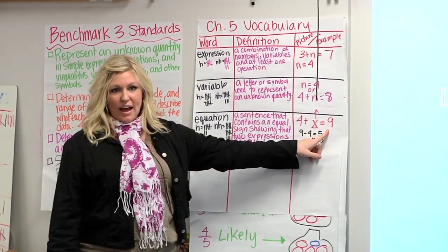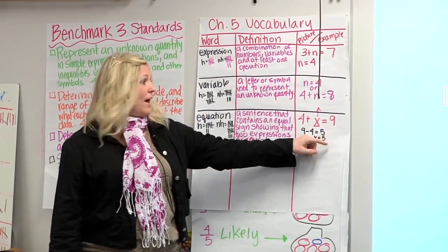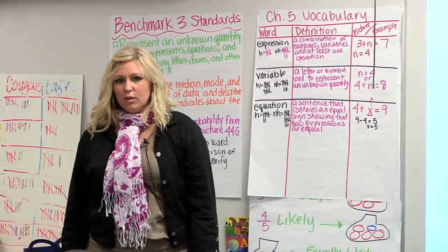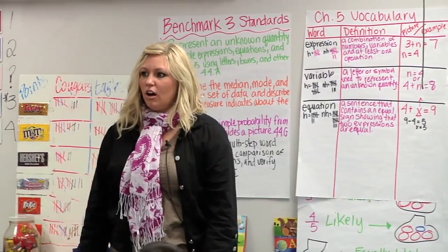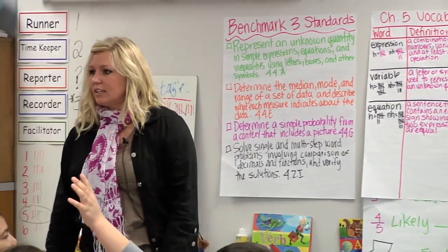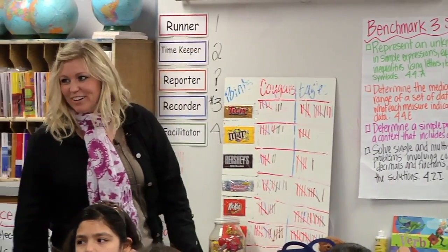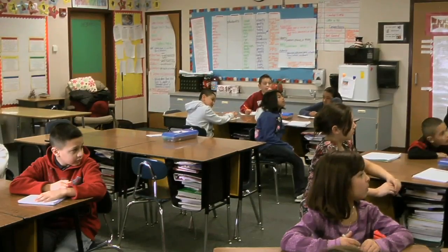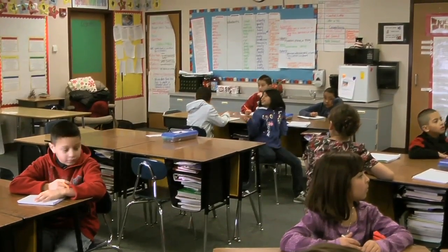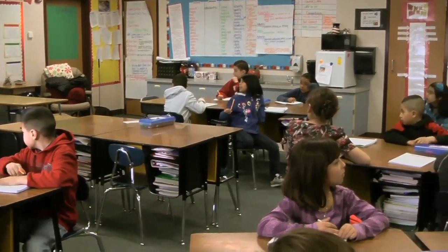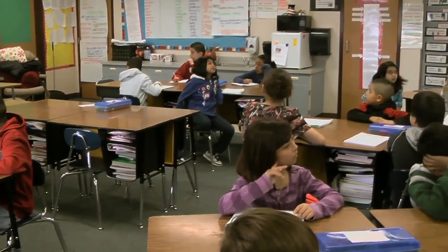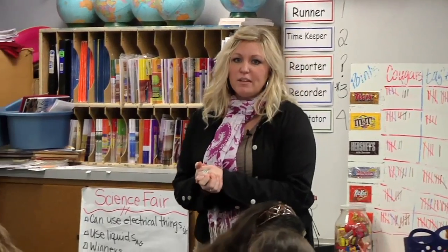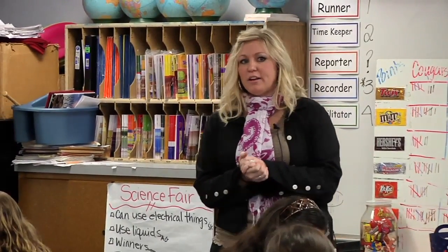Did everybody remember that? And x is called a what? Isaac? A variable. Very good. So today it says I'm going to defend my answer to my group using words, numbers, and pictures. Who can explain to me how I do that?